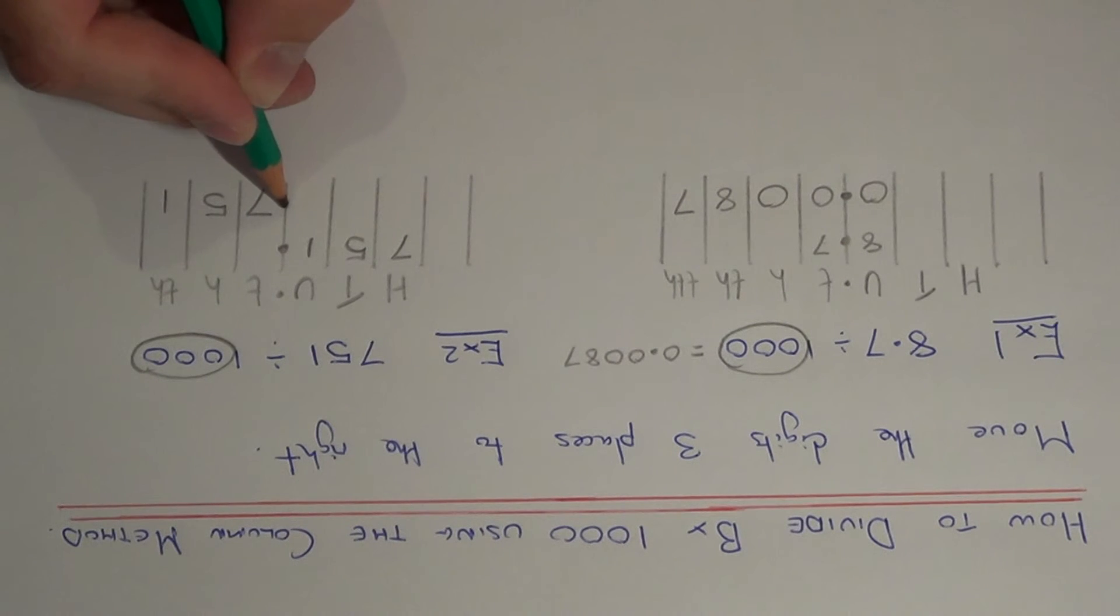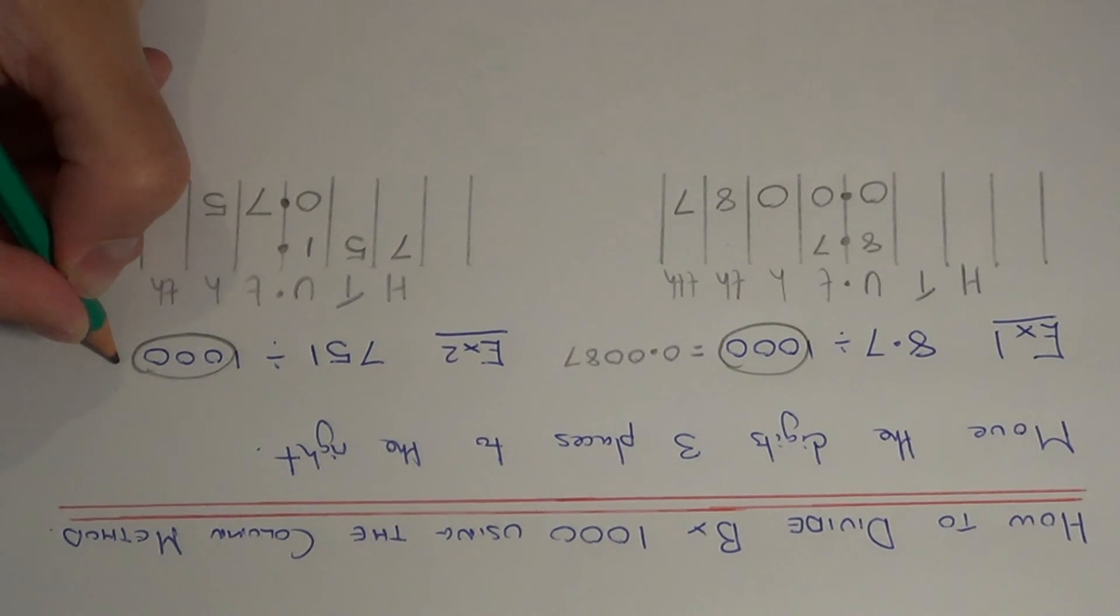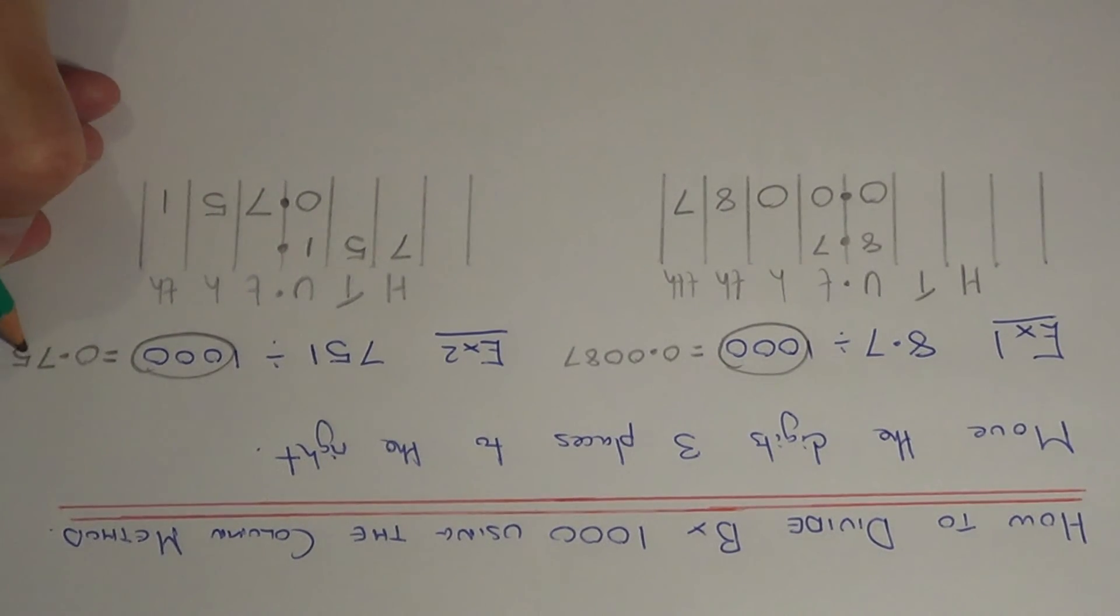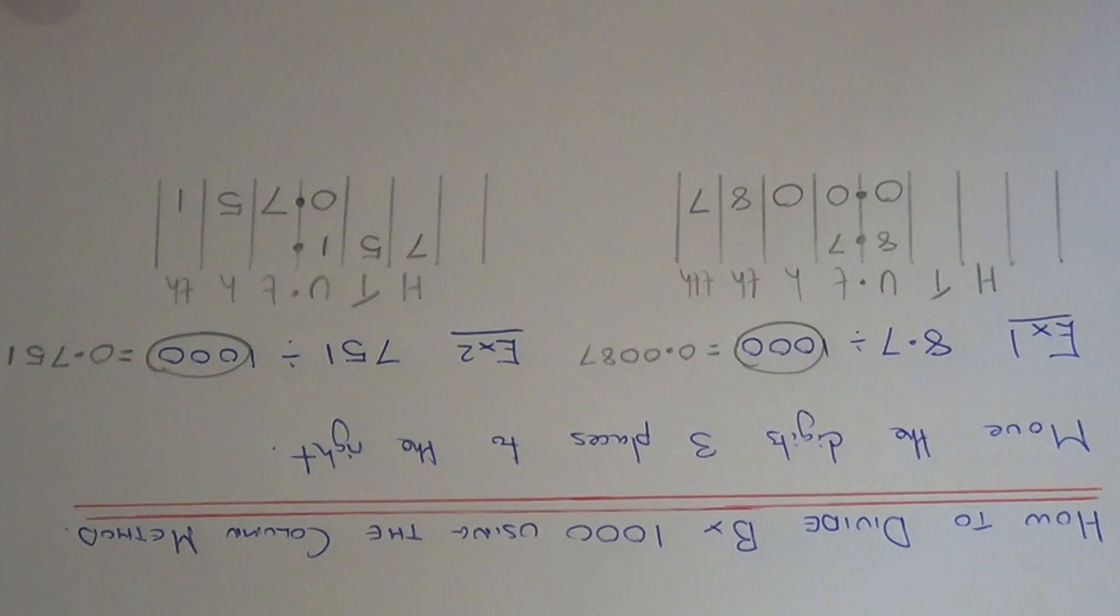The decimal point again doesn't move, so that stays still. Now, this time there's no gaps to fill in between the decimal point and the numbers. But we need to put a zero before the decimal point. So our final answer is 0.751. Thanks for watching.